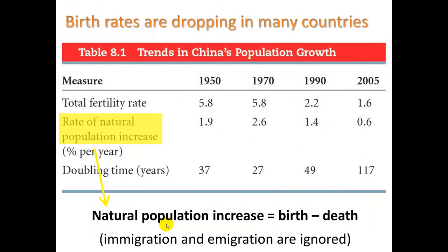We do know that birth rates are dropping in many countries. Looking at China: from 1950, the total fertility rate was 5.8 children born to each woman on average. Today, in 2005, it is 1.6. The rate of natural population increase means birth minus death — immigration and emigration are ignored. That number has also declined in China.